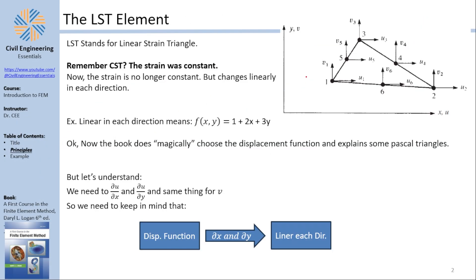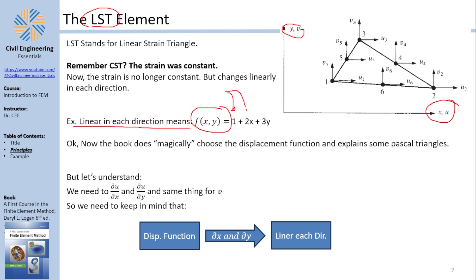In today's video we're going to be talking about the linear strain triangle. LST stands for this, and as you can see, this strain is linear. What does a linear function mean? We are talking about 2D space in X and in Y. A linear function in both directions has a constant plus a coefficient multiplied by X plus another coefficient multiplied by Y. The linear strain triangle features an equation that looks like this.